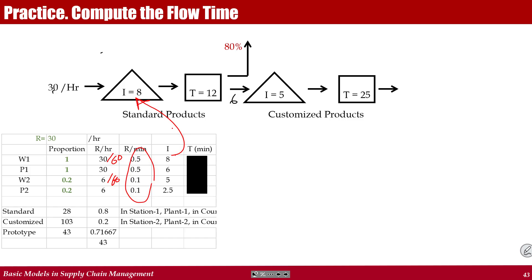There are 8 flow units in the first waiting line and 5 flow units in the second waiting line. We can compute how many flow units are here and how many flow units are here easily. We have this 8 here, we have this 12 here, we have this 5 here, and we have this 25. I have throughput. I have inventory. I can compute flow time.